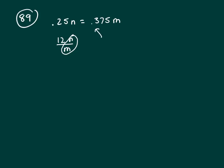So let's go back to this equation. The first thing I'm going to do is divide both sides by m. So that gives me .25n over m equals .375.